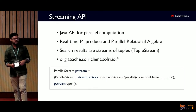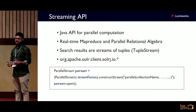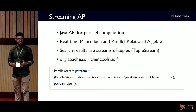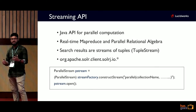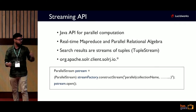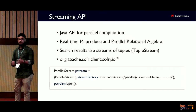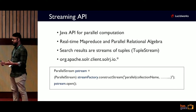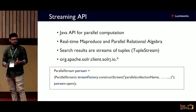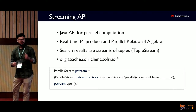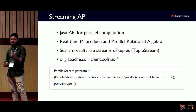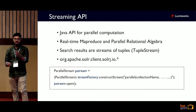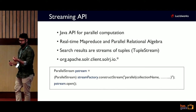Starting with the streaming API, it is a Java API available for parallel computation of MapReduce and relational algebraic operations. You create streaming objects through Stream Factory and have a number of APIs available to perform different operations. The open function emits search results as a stream of tuples. Each tuple is a TupleStream object — TupleStream is the base class of streaming in Apache Solr's source code.